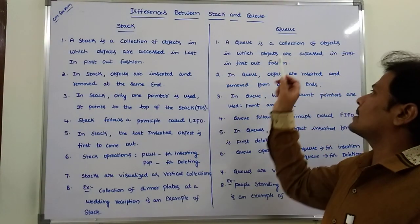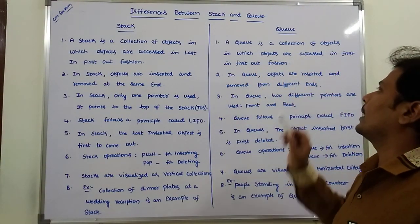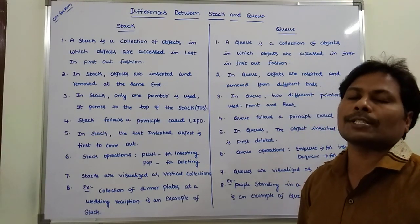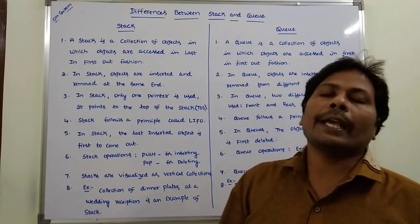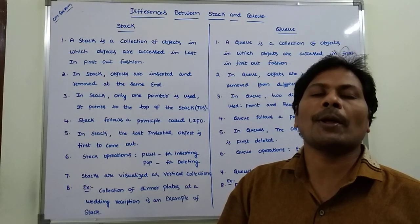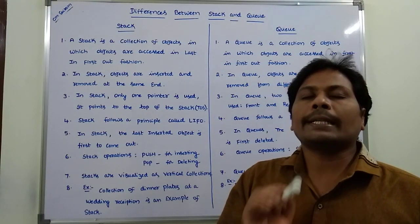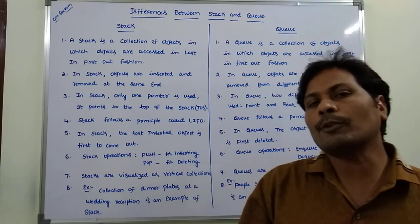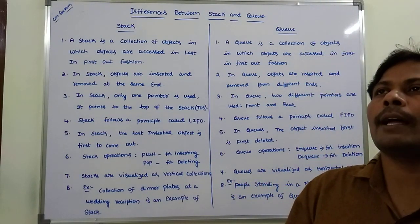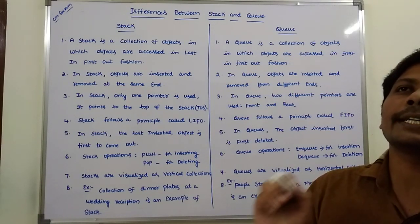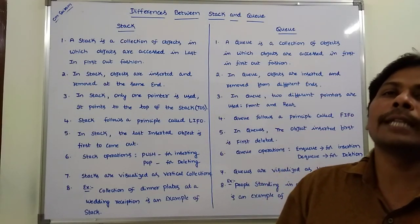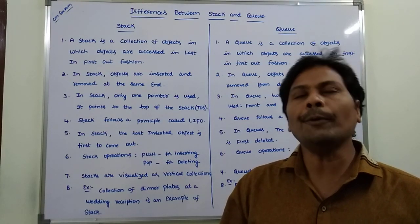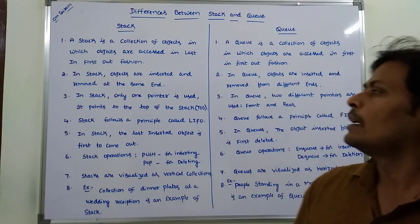A queue is a collection of objects in which objects are accessed in first in first out (FIFO) fashion. Whatever object is entered into the queue first, that object is deleted or removed from the queue first.